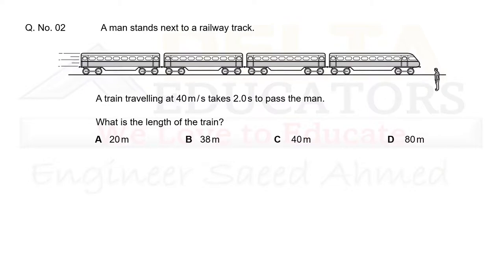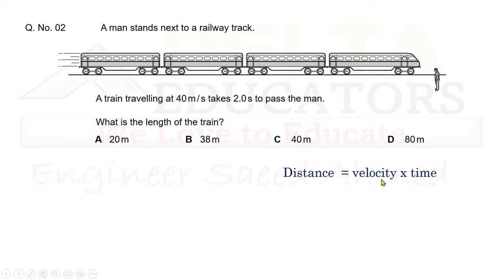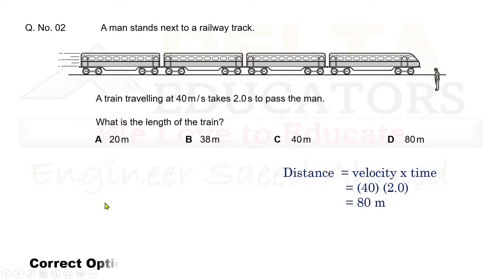Question 2: A man stands next to a railway track. A train travelling at 40 m/s takes 2 seconds to pass the man. What is the length of the train? We use distance equals velocity multiplied by time. Velocity is 40 m/s and time is 2 seconds, so distance equals 40 × 2 = 80 m. 80 m is given in option D, so the correct option is D.